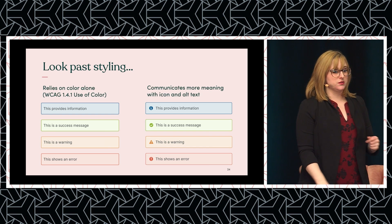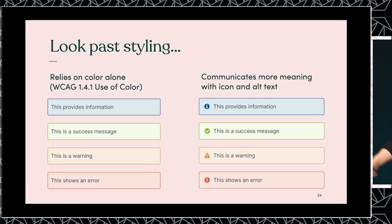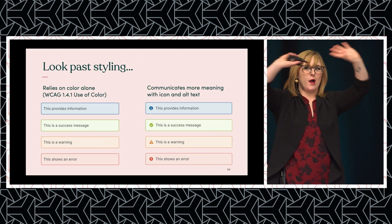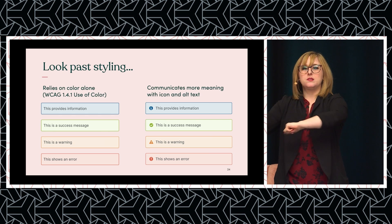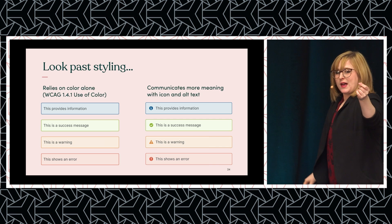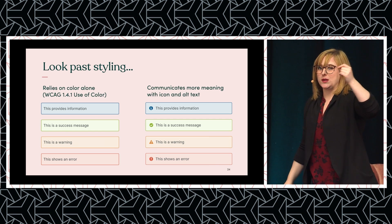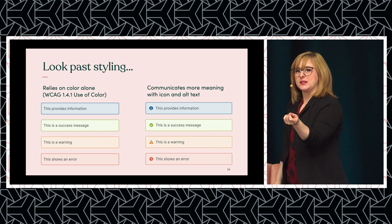Let's look at an example. On the left we have a set of alerts — information, success, warning, and error. In this circumstance we've relied on color alone to indicate the purpose. We can enhance accessibility using an icon and alt text so folks who are colorblind, have low vision, or are blind can understand that context. In our audit, we discover the items on the left fail WCAG 1.4.1 use of color.